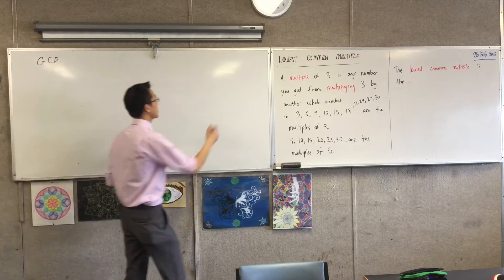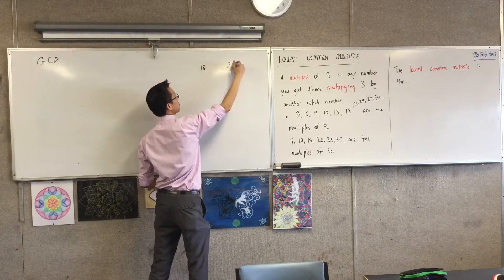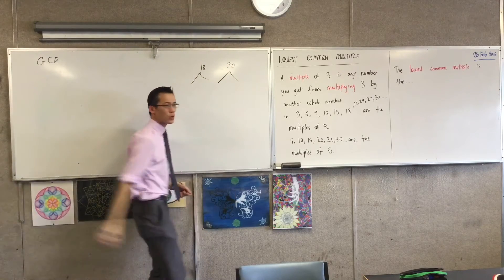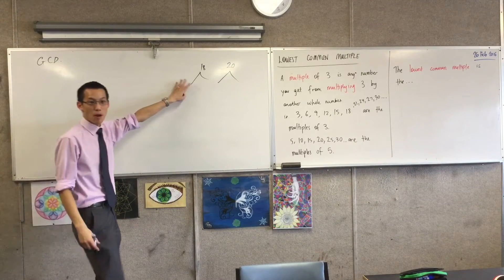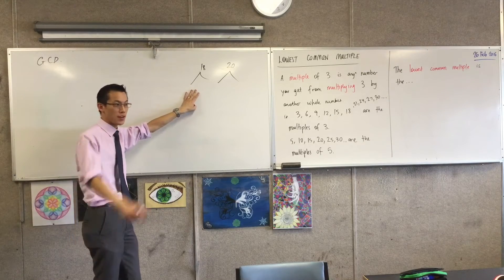So, for example, with 18 and 20, do you remember, well, how would we break this down? How would we use prime factor trees to help us? Can someone maybe give me a prime factorization of 18? What would you do first?